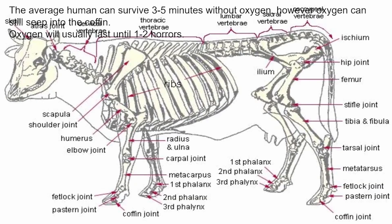Step 8: Bury them! Step 9: Play 1 to 2 homers. The average human could survive three to five minutes without oxygen. However, oxygen could still seep into the coffin. Oxygen will usually last until one to two hours.